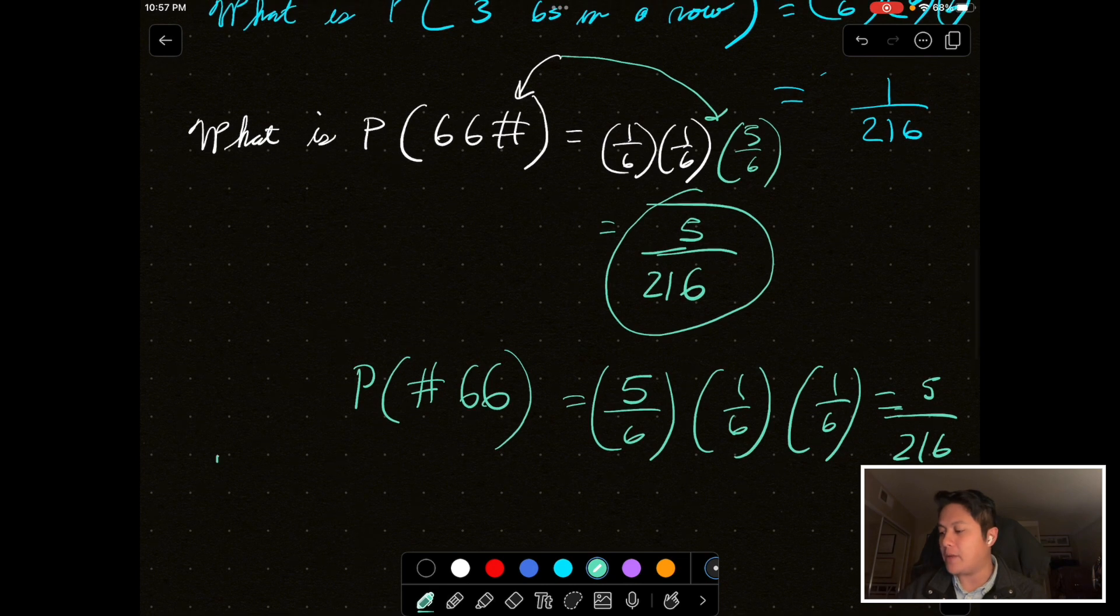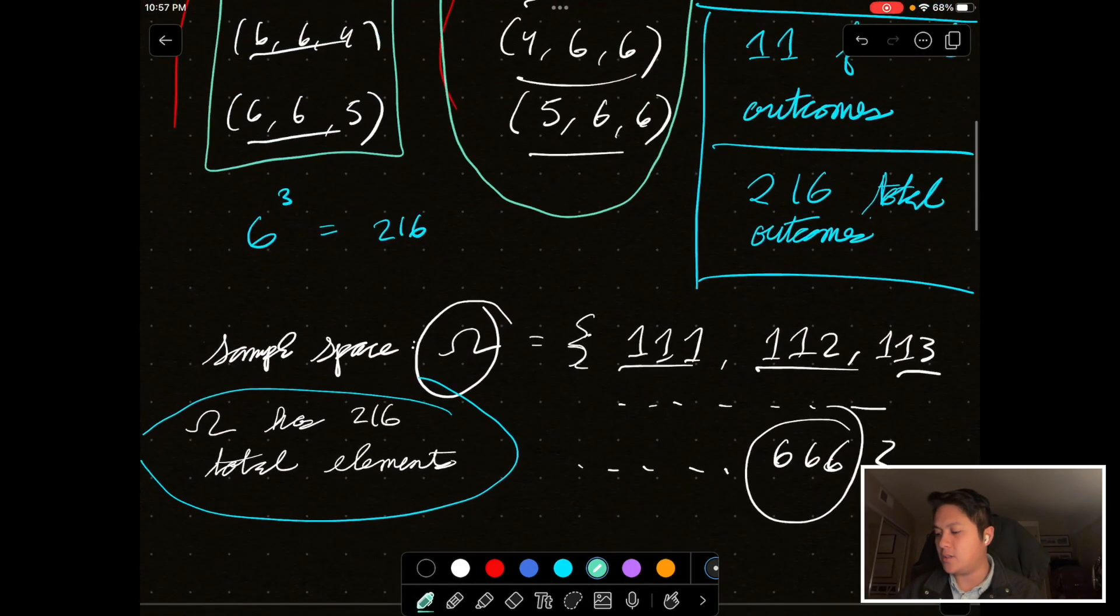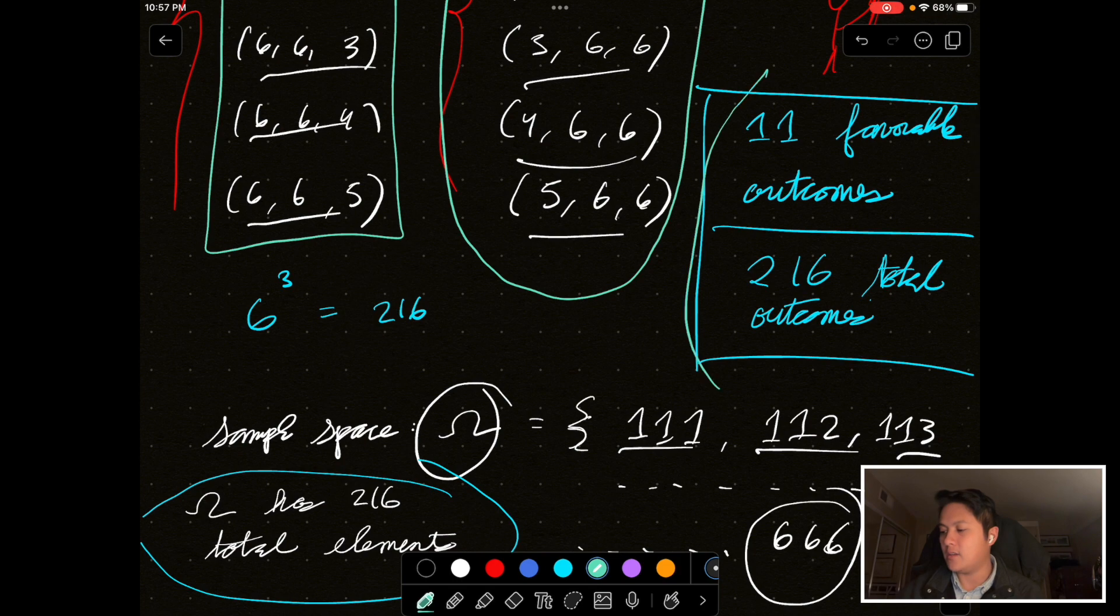And so, again, if you add up all these probabilities, one over 216, plus five over 216, plus five over 216, you get 11 over 216, which corresponds to the same answer we had right here. I know I'm just making this art project right now. I hope it's somewhat coherent.